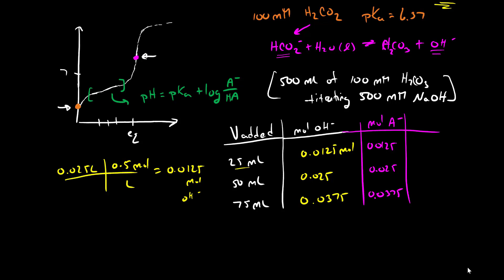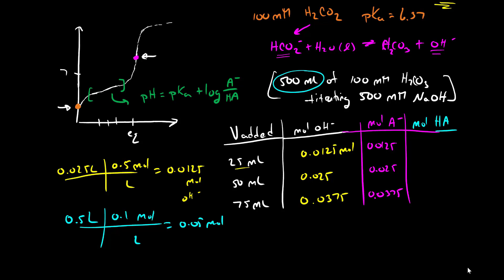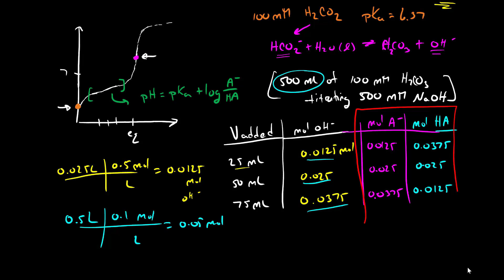The last step is to figure out how many moles of acid we started with so we can determine how many moles of weak acid remain. We have 0.5 liters times 0.1 moles per liter, giving us 0.05 moles of carbonic acid to start with. After adding 25 mL, 0.0375 moles remain. After 50 mL, 0.025 moles remain. After 75 mL, 0.0125 moles remain.